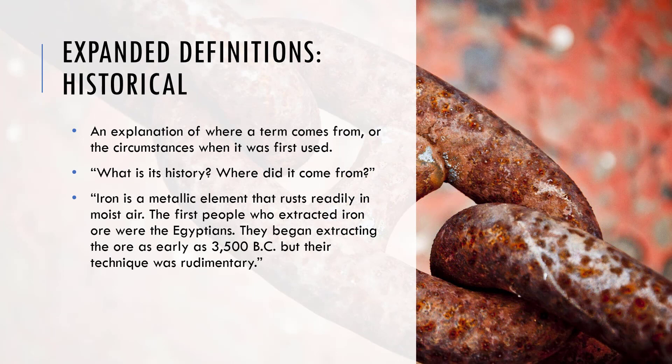Another type of expanded definition is historical — an explanation of where the term originated and the circumstances in which it was first used. The questions you're answering are: what is its history, and where did it come from? The example is iron: 'a metallic element that rusts readily in moist air. The first people who extracted iron ore were the Egyptians — they began extracting the ore as early as 3500 BC, but their technique was rudimentary.' From that history, you can figure out what iron is.